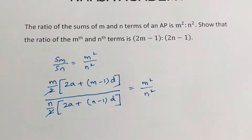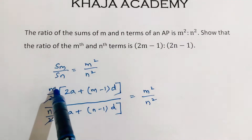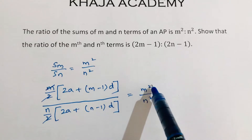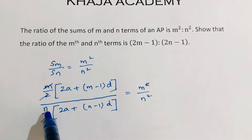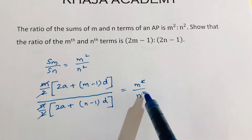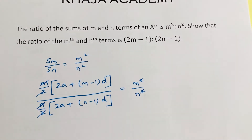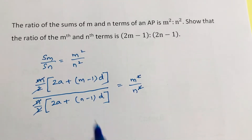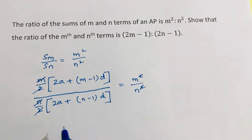2 and 2 will get cancelled, m and m will get cancelled, n and n will get cancelled. Now cross multiply.